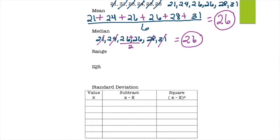To find the range, subtract the smallest number from the biggest number. Remember, the range should not be negative — if it is, you've subtracted in the wrong order. The biggest number is 31 and the smallest is 21, so 31 minus 21 equals 10.